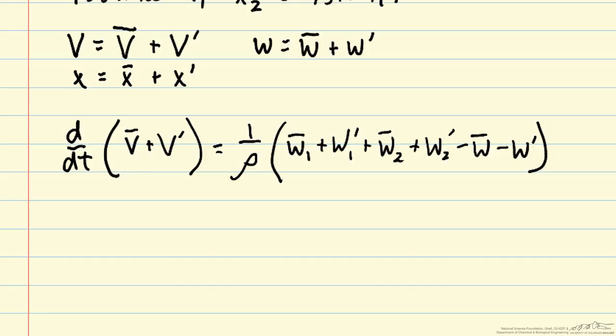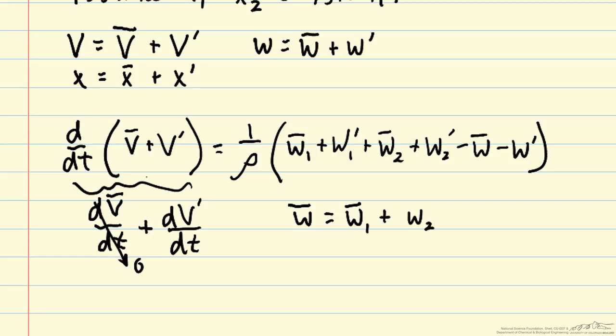The derivative operator is a linear operator, so we can distribute it within our two terms. And v bar is a constant, so that term is zero. We also know from our steady state calculations that w bar equals w1 bar plus w2 bar. At steady state, the outlet flow equals the inlet flow, and that allows us to cancel out these bar terms.